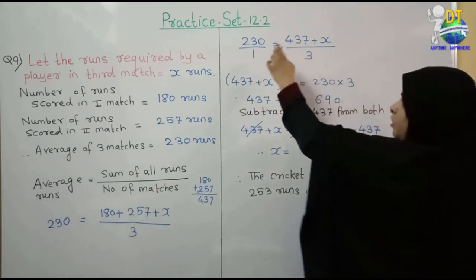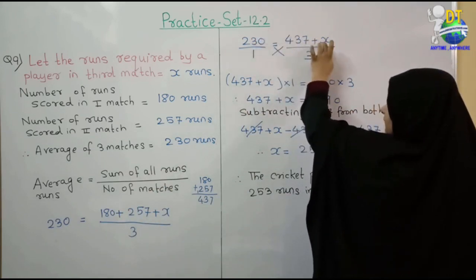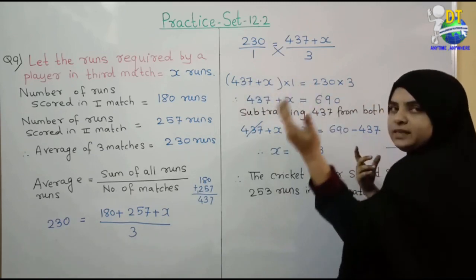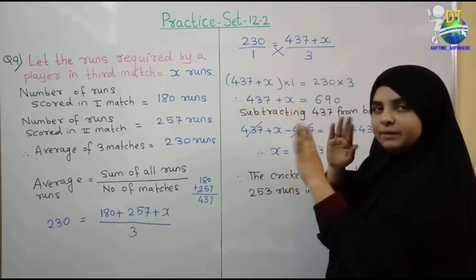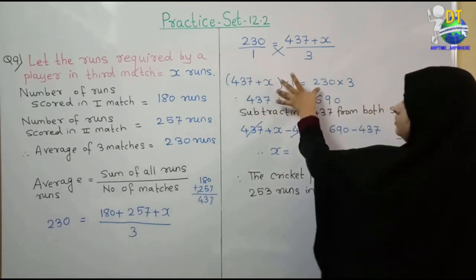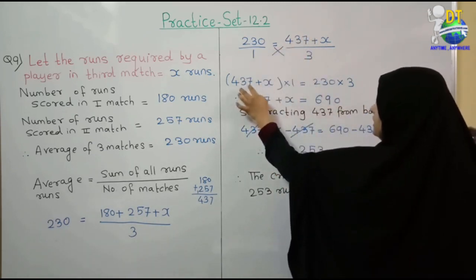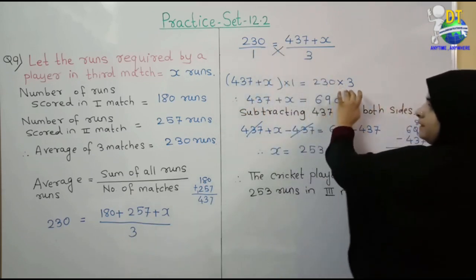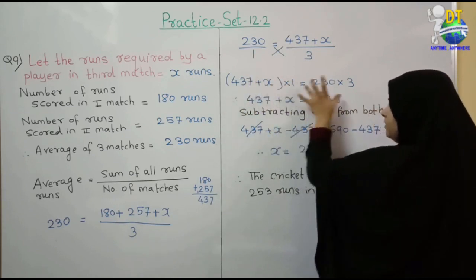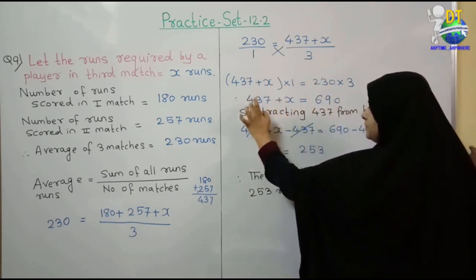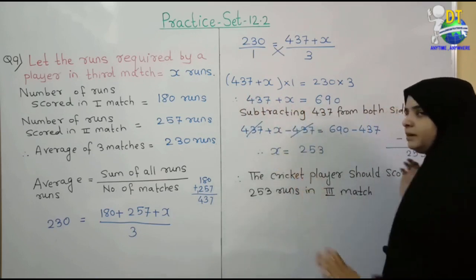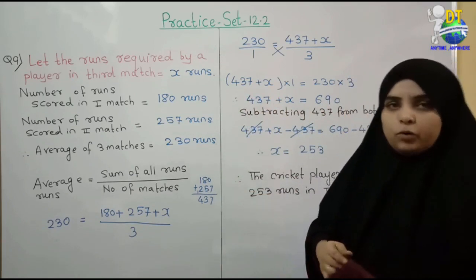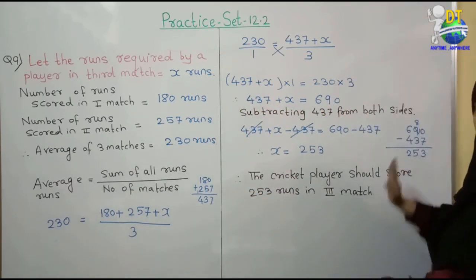तो पहले हमने equation ऐसे लिखी — बाद में x यहाँ पे इसलिए पहले यह लिखी. दोनों equal हैं — आप किसे भी पहले लिख सकते हो. तो पहले हमने 437 plus x multiply by 1, फिर 230 multiply by 3 — 1 से multiply करें तो equation मिल गई। Subtract करके direct x में answer आ जाएगा।